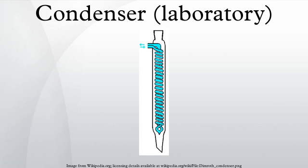Dimroth condenser: A Dimroth condenser, named after Otto Dimroth, is somewhat similar to the coil condenser. It has an internal double spiral through which coolant flows such that the coolant inlet and outlet are both at the top. The vapors travel through the jacket from bottom to top. Dimroth condensers are more effective than conventional coil condensers.